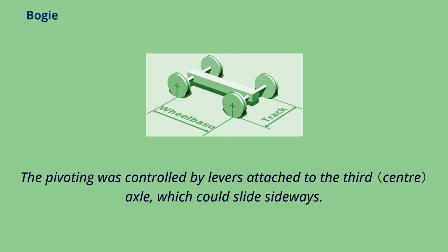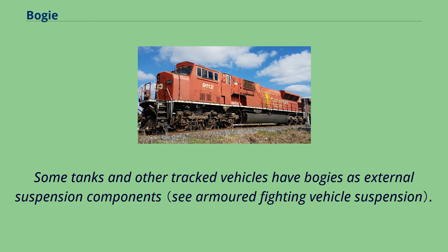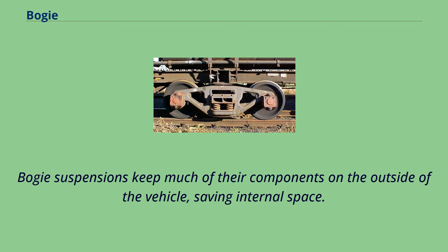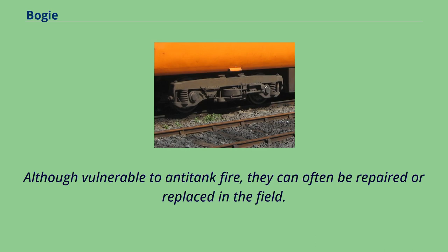Some tanks and other tracked vehicles have bogeys as external suspension components. This type of bogey usually has two or more road wheels and some type of sprung suspension to smooth the ride across rough terrain. Bogey suspensions keep much of their components on the outside of the vehicle, saving internal space. Although vulnerable to anti-tank fire, they can often be repaired or replaced in the field.